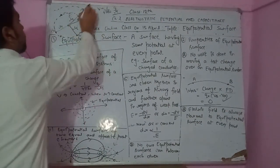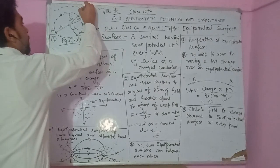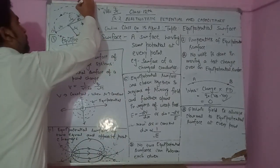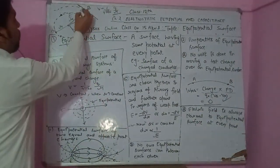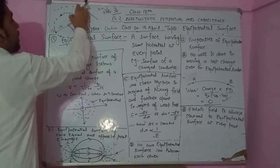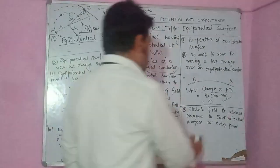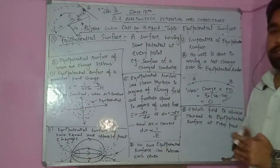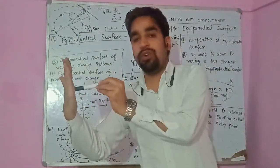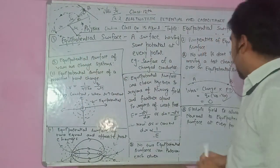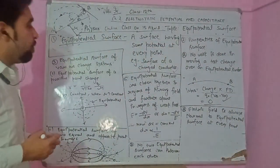The direction of the equipotential surface can be found by drawing a tangent to the spherical surface. From class 9 or 10, we know that the tangent is always perpendicular to the radius. Therefore, the angle between the electric field and the equipotential surface plane is always 90 degrees. So the electric field is always normal to the equipotential surface — they are always perpendicular to each other.